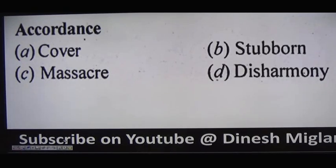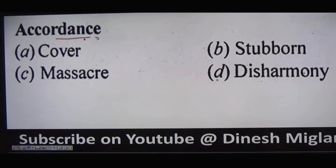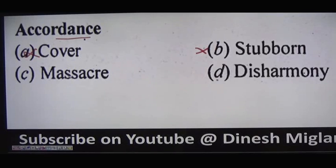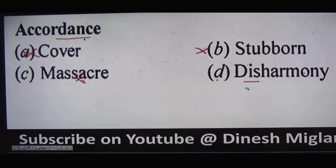Next word: 'accordance,' meaning with agreement or in confirmation with something. Option A is 'cover' — can't be our answer. Option B is 'stubborn,' meaning a person who refuses to change — can't be the answer. Option C is 'massacres,' meaning the massive killing of a large number of people at once — not our answer. Option D is 'disharmony.' Wherever you find 'dis' before any word, it always means negative — so disharmony means lack of agreement. Accordance means with agreement; disharmony means lack of agreement — that is our answer. Next word: 'accustom,' meaning to make someone accept or agree. Option B is 'abjure,' meaning to reject a claim. Since accustom means to accept and abjure means to reject, abjure is our answer.